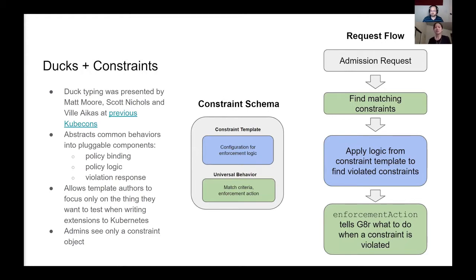How does this look inside Gatekeeper's code? When Gatekeeper receives an admission request from the API server, the first thing it does is find the matching constraints using the match criteria as defined by the admin. It then passes off execution to the template logic backing each constraint, which tells Gatekeeper whether the constraint was violated or not. Gatekeeper then aggregates the results and uses enforcement actions on the constraint to tell the API server how to proceed.